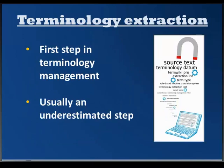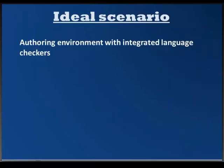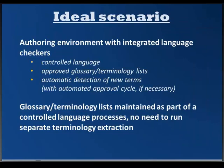How do you get a list of terms if you don't have anything at the moment? This is usually the first step, and it is underestimated — people don't create this list because they don't have tools, don't have time, or it's not part of the document creation process. The ideal scenario would be working in authoring environments with integrated language checkers supplied with approved glossary and terminology lists. In controlled language environments, they can automatically detect new terms. An example of such a terminology management tool is Acrolinks.